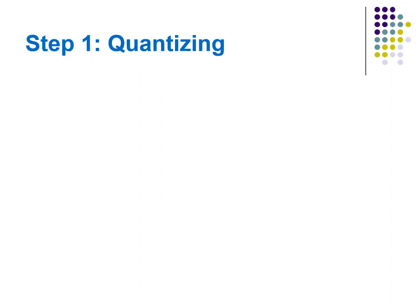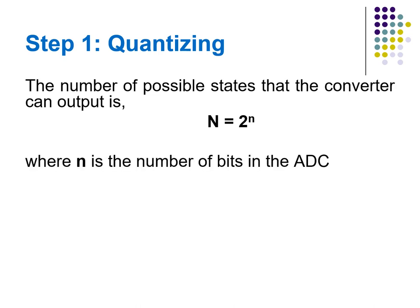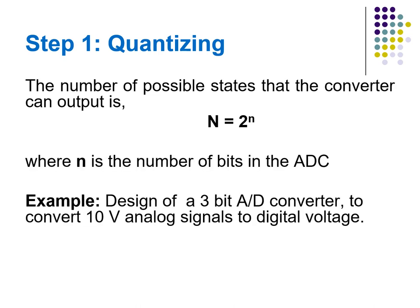Step one — quantizing. The number of possible states that the converter can output is N equal to 2 to the power n, where n is the number of bits in the ADC. Let us design a 3-bit A-to-D converter to convert 0–10 volt signals to a digital voltage. The number of possible states is N = 2³, which is 8.